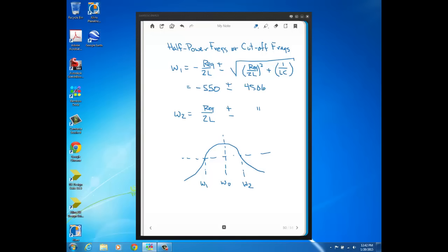Now remember, I talked about this when we first talked about these equations that you're going to get two answers since this is a result of a quadratic equation, so we get two roots. One is negative and you ignore the negative one. So the answer would be minus 550 plus this 4506, which gives us 3956 radians per second for our omega 1.